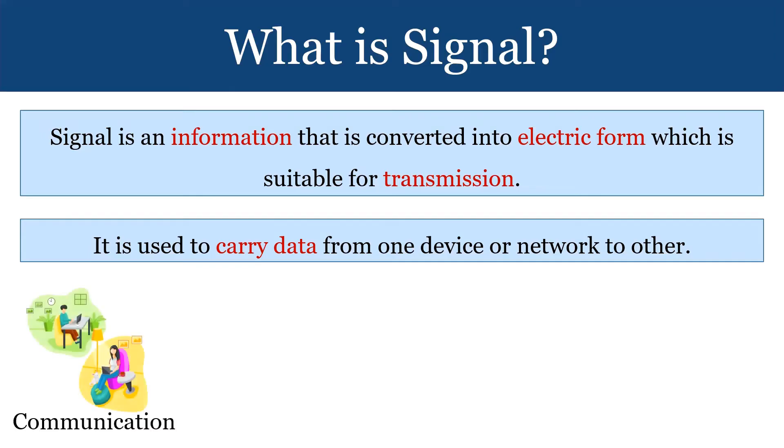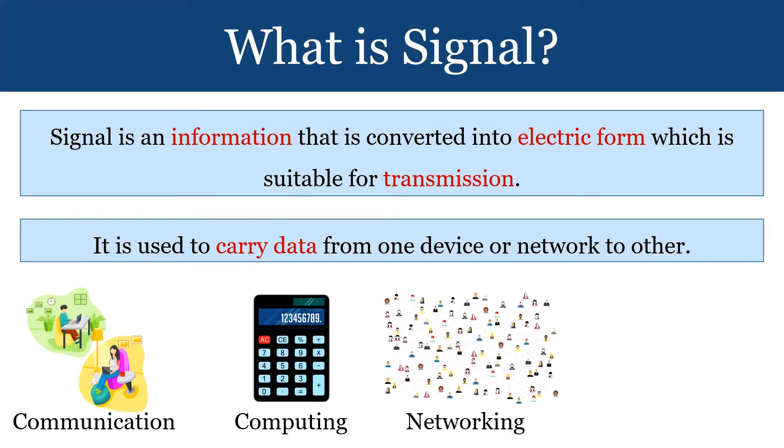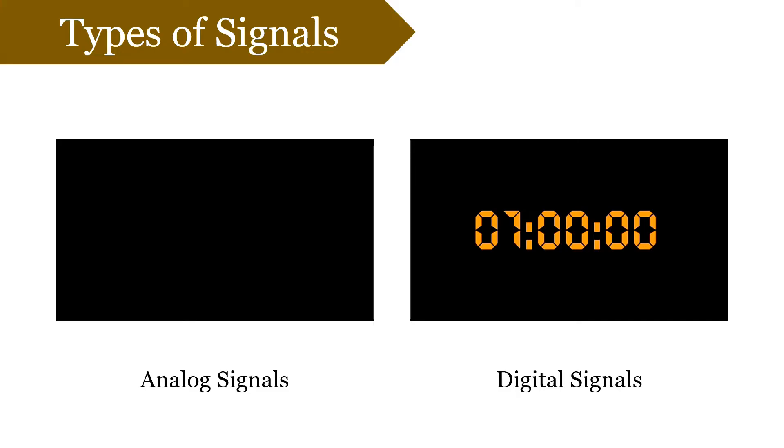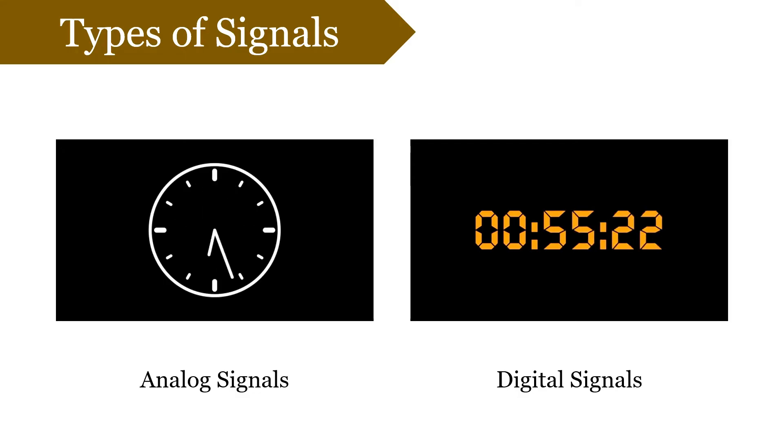Signals are used in communication, computing, networking, and also in electronic devices. Now if we classify signals on the basis of their behavior, then they are of two kinds: analog signal and digital signal. Analog signal is one that presents continuous change in values, and digital signal represents discrete values. We will study both of them in detail.